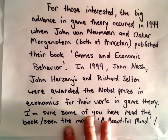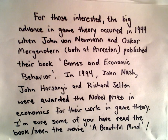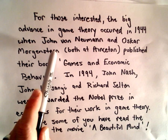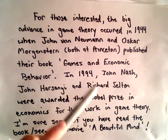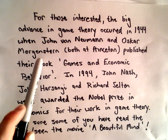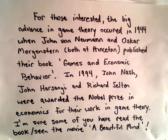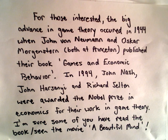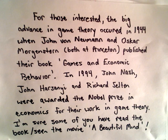Just a little history: the big advance in game theory occurred in 1944, when the high-powered mathematician John von Neumann and Oscar Morgenstern — both at Princeton — published their book Games and Economic Behavior. Game theory probably got started around the 1920s, but it was these two people that really developed it into something more.